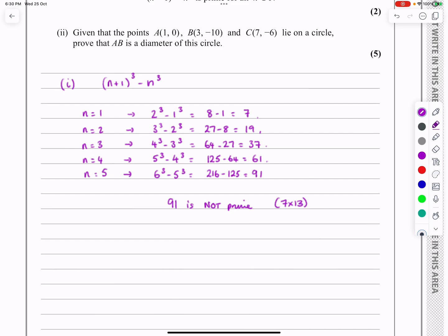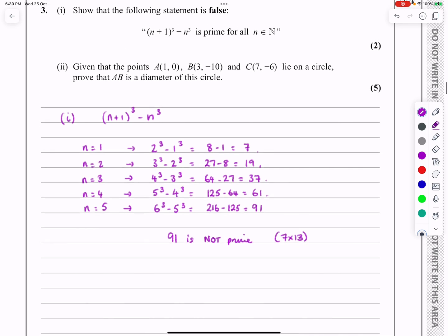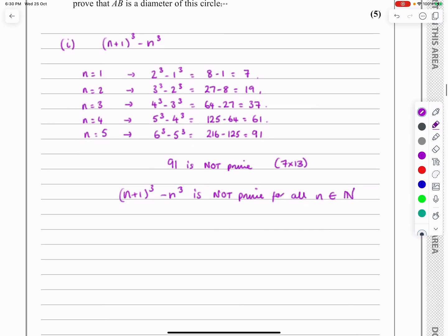Not a surprise to me, I guess. Let's make sure I finish the answer off. So (n+1)³ - n³ is not prime for all n contained within a set of natural numbers there.